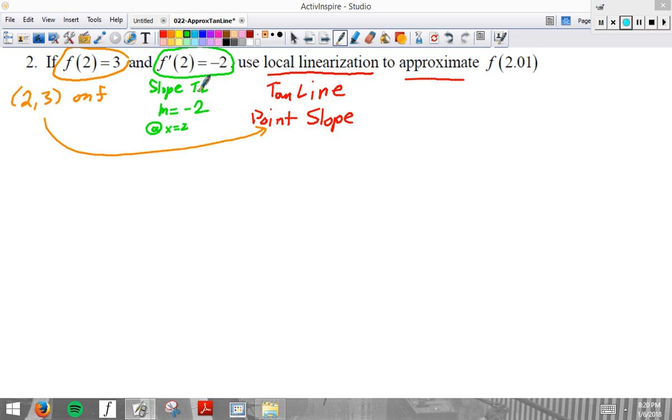When x equals 2, the slope is negative 2. So, all we need to get in an equation of a tangent line are those two things. Y minus y1 equals m times x minus x1. Done.